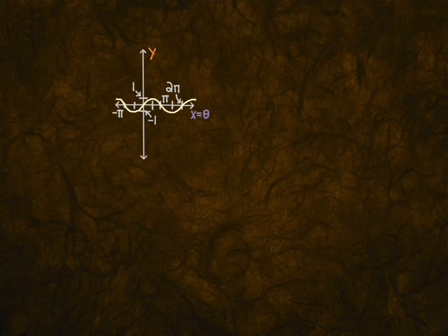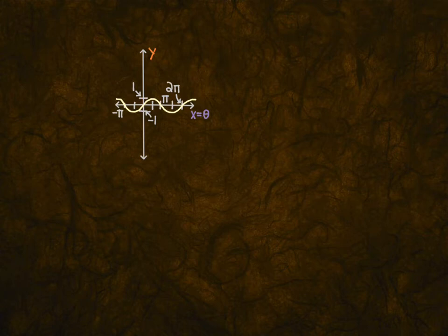The horizontal axis will be the angle, which is most often called x, sometimes called theta, sometimes called t. The angle is the horizontal axis; the vertical axis is the output. So for example, if we had sine theta — or sine x, either way — y equals sine x, the sine x is the vertical distance. As you can see, sine x oscillates between negative 1 and 1.